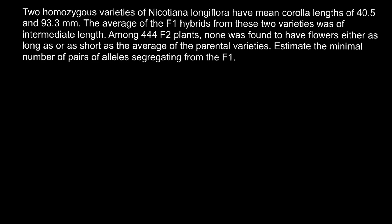This video is going to be about quantitative genetics, and here's a problem. Two homozygous varieties of Nicotiana longiflora have mean corolla lengths of 40.5 and 93.3 mm. The average of the F1 hybrids from these two varieties was of intermediate length. Among 444 F2 plants, none was found to have flowers either as long as or as short as the average of the parental varieties. You have to estimate the minimal number of pairs of alleles segregating from the F1.